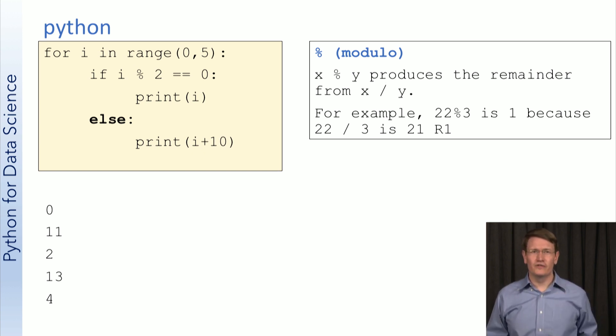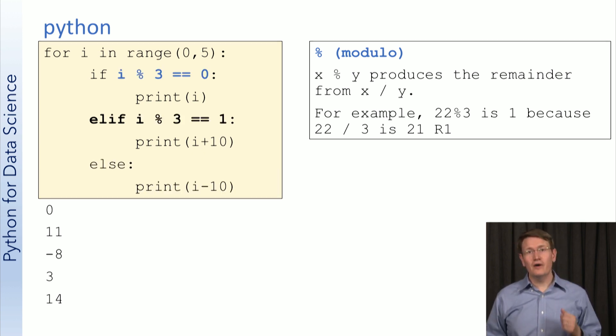Let's do one more of these. Now we're testing if i modulo 3 is 0. Notice the new if statement in blue. If i modulo 3 isn't 0, we next test to see if it's equal to 1 using elseif. Notice that elseif from other languages translates to E-L-I-F in Python.